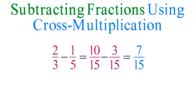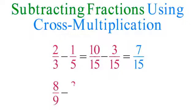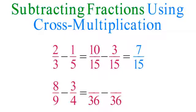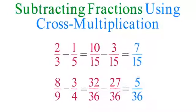As another example, to subtract 8 ninths minus 3 fourths, multiply the denominators: 9 times 4 equals 36, and use this number as your common denominator. Next, multiply 8 times 4 equals 32, and 9 times 3 equals 27, placing these numbers in the numerators. Subtract 32 over 36 minus 27 over 36, so the answer is 5 over 36.